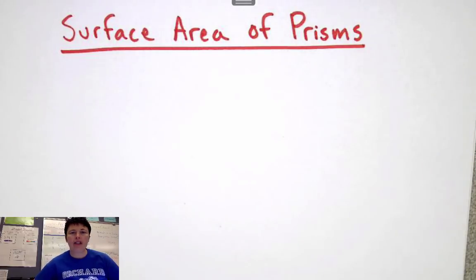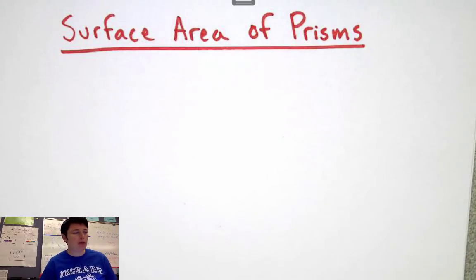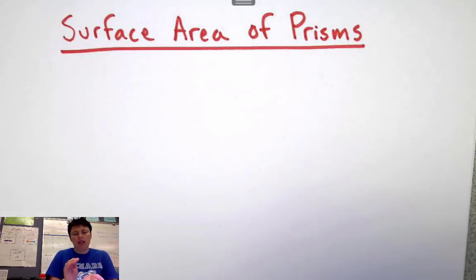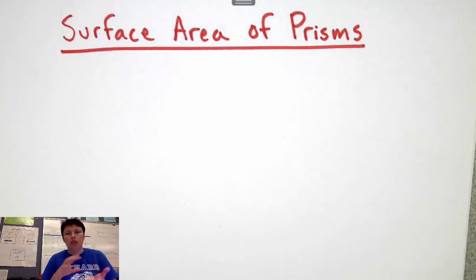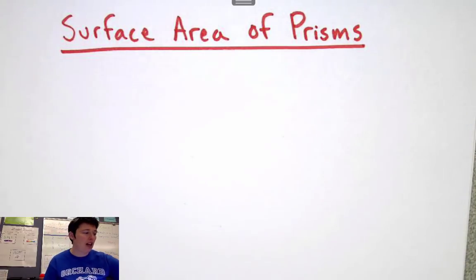Hey guys, we're going to do a video here on something called surface area of prisms. There are lots of different types of prisms, so I'm really going to focus on two types today. The most important thing you need to know is a prism is a three-dimensional shape. We have names for 3D shapes, and we're going to focus on rectangular prisms today.